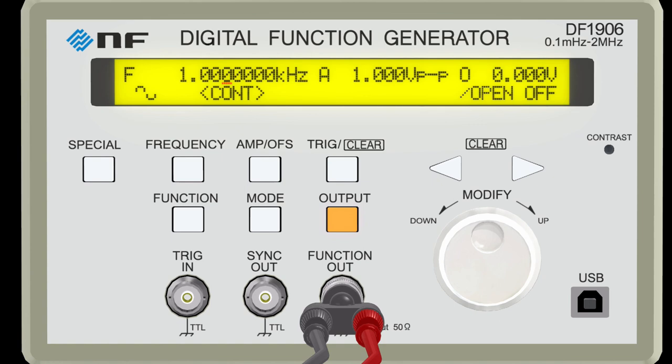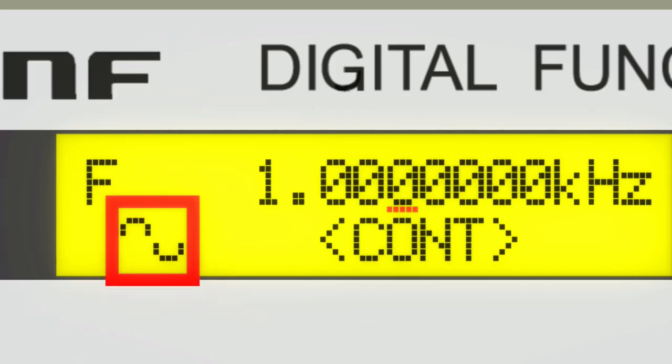The next step is to set the oscillator. By default, the output of this model is set to a sine wave with a frequency of 1 kHz and a voltage of 1 volt peak to peak. First, check the frequency and waveform.